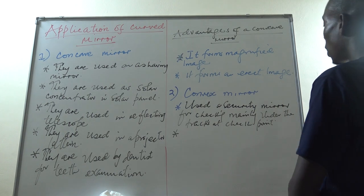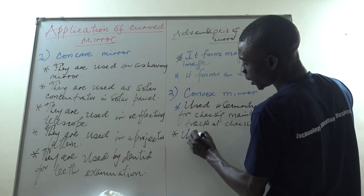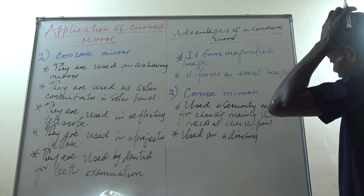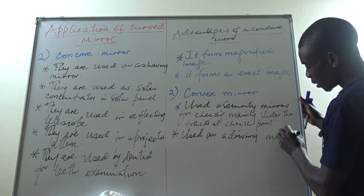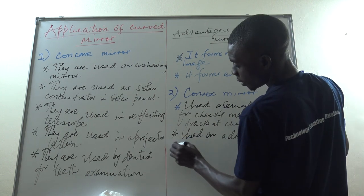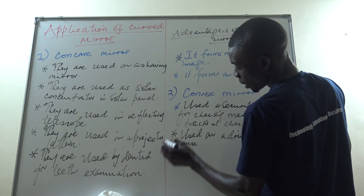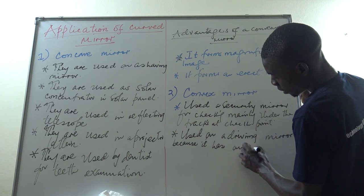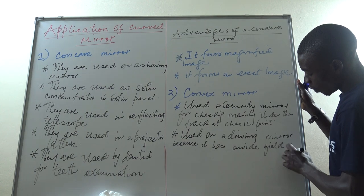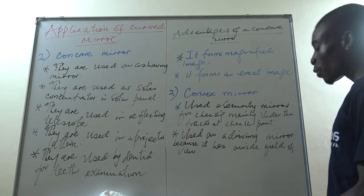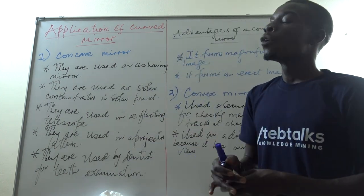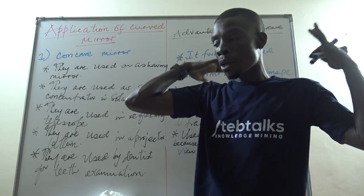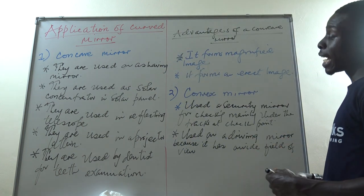Convex mirrors are also used as a driving mirror. They are used as driving mirrors because they have a wide field of view. The side mirrors on motorcycles and cars are convex mirrors because they allow us to see things over a very large area behind the vehicle.